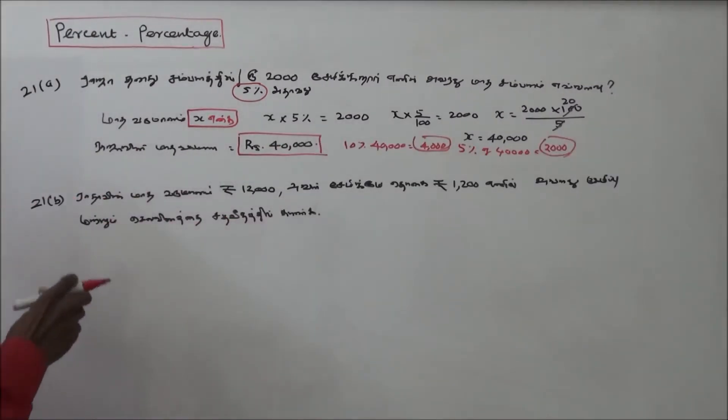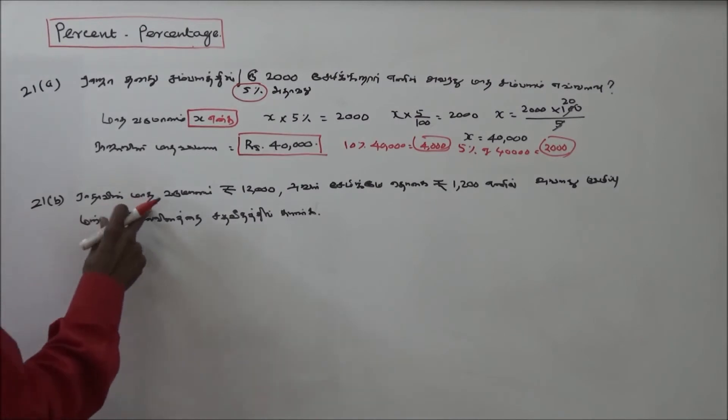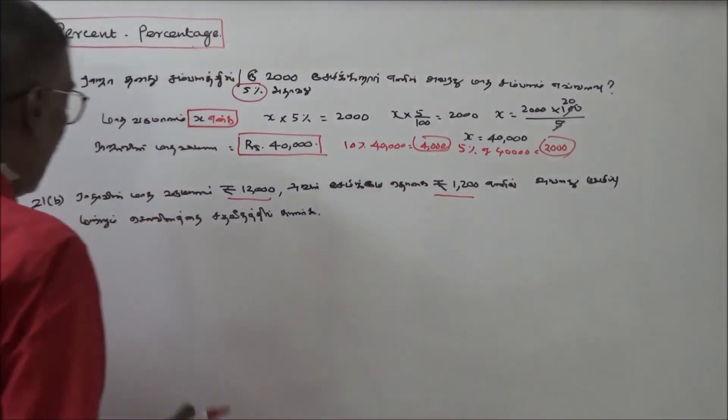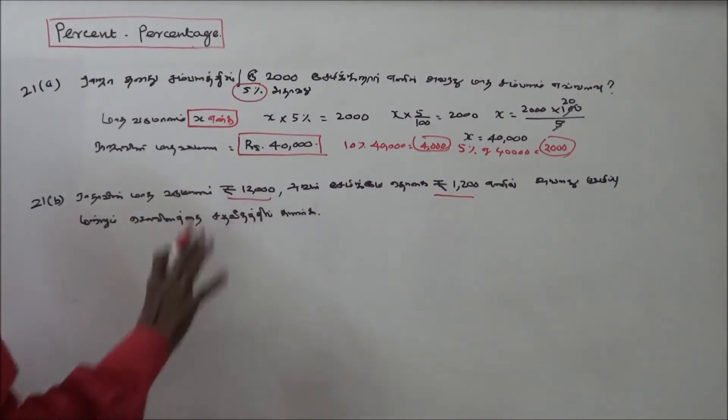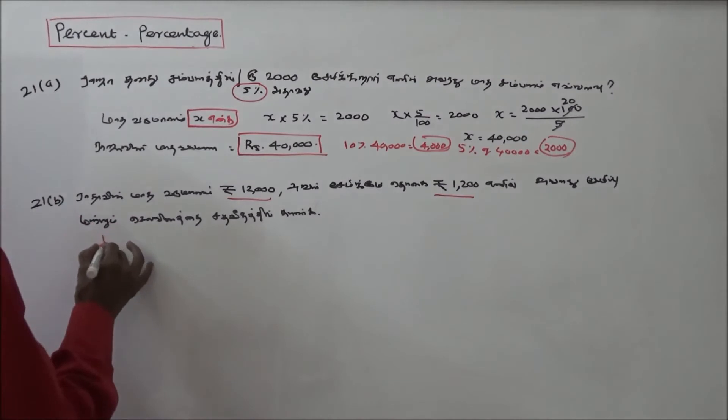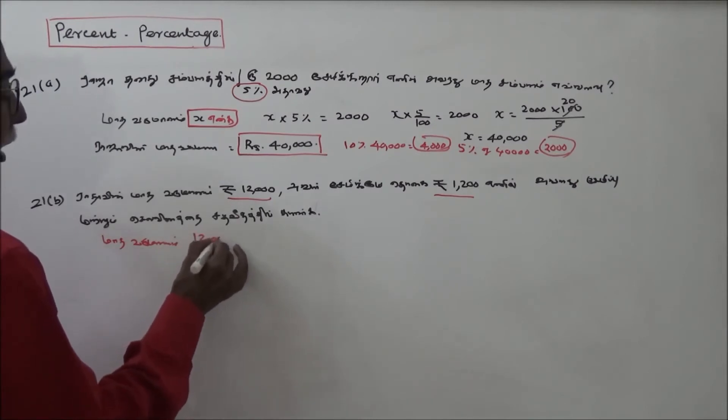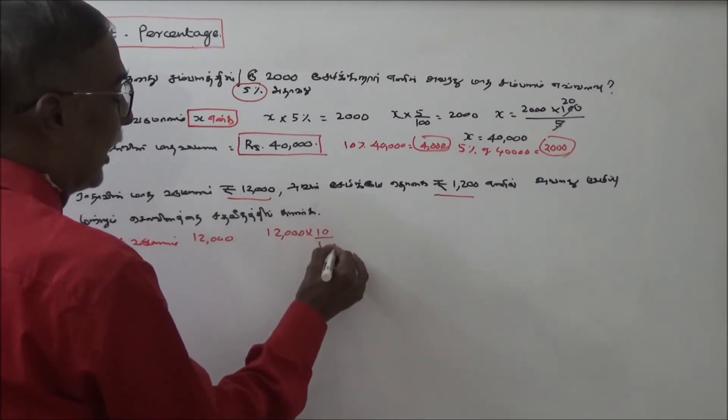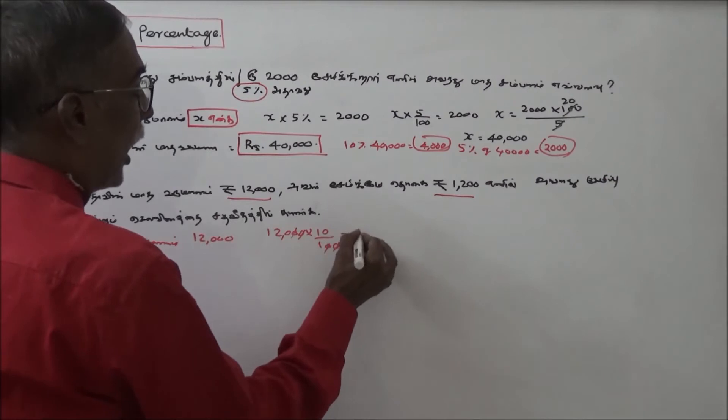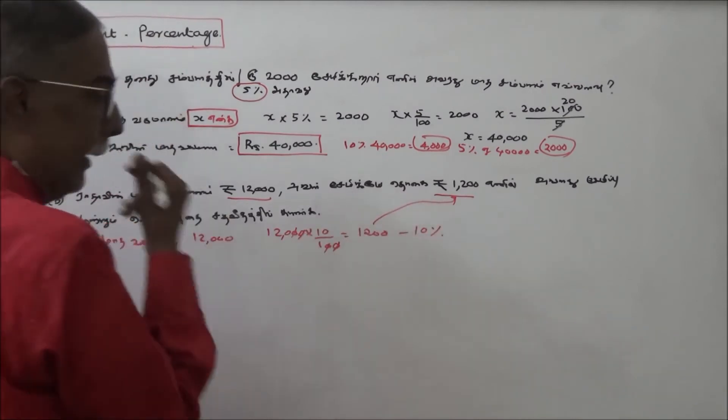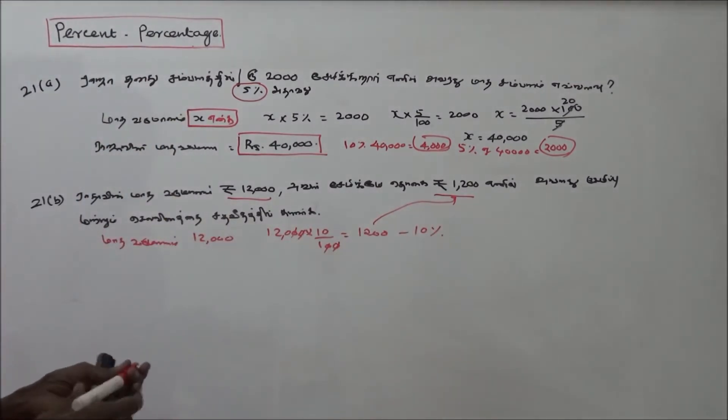Problem number 21b: If savings are 10 percentage, then the remaining amount is 100 minus 10, which is 90 percentage.